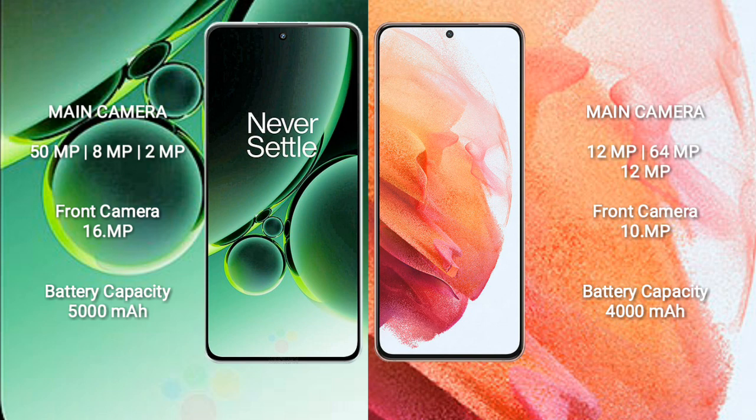OnePlus Nord 3 features a rear triple camera setup: 50MP + 8MP + 2MP, and a 16MP front camera. Samsung Galaxy S21 features a rear triple camera setup: 12MP + 64MP + 12MP, and a 10MP front camera.